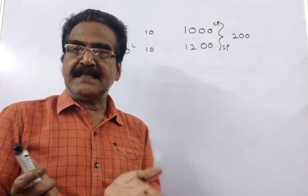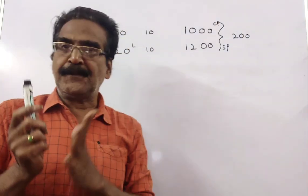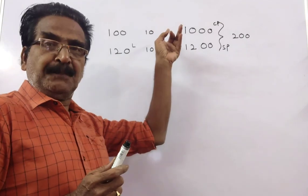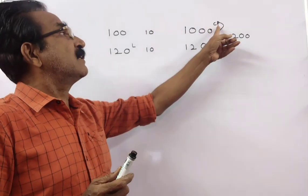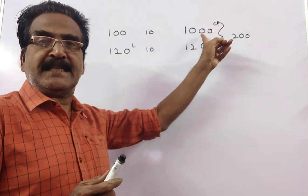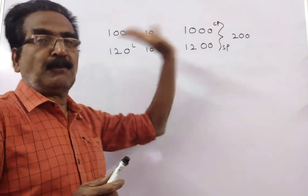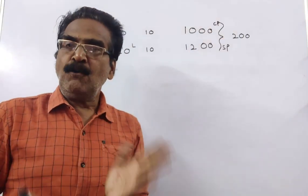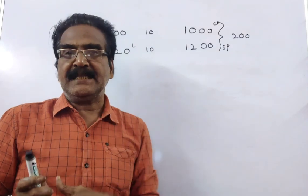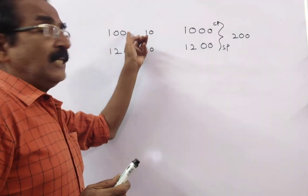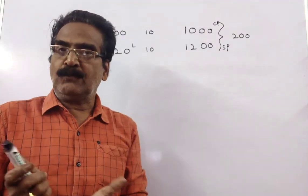He has purchased 100 liters of pure milk at 10 rupees a liter. Then his cost price will be 1000, 100 into 10, 1000 rupees. Now he added 20% of water. Then the quantity becomes 120 liters.